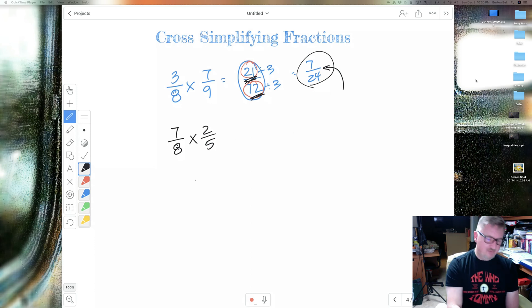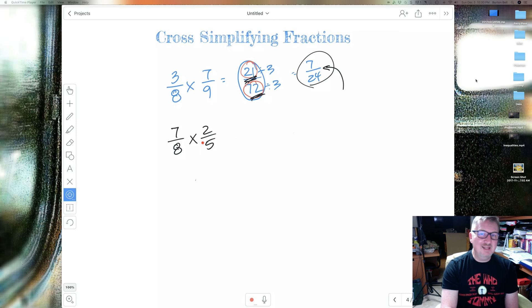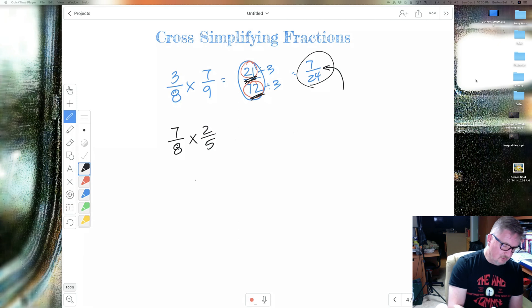I can't simplify 7 over 8, and I can't simplify 2 over 5. So I got to figure, can I simplify the 7 with the 5, or can I simplify the 2 with the 8? Well, 7 is prime, and so is 5. So the only thing they have in common is 1. That's not going to help me. But 2 is even, and so is 8. So guess what? I can divide 8 by 2. So that's what I'm going to do. I'm going to divide the 2 by 2, and I'm going to divide the 8 by 2.